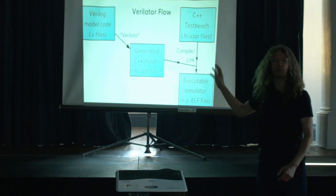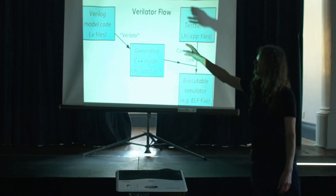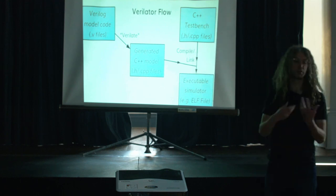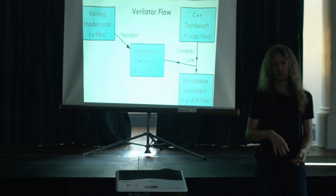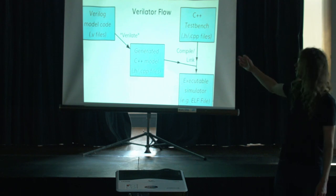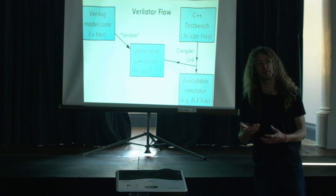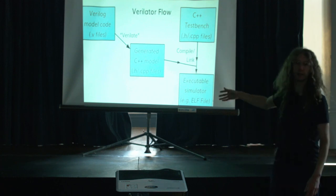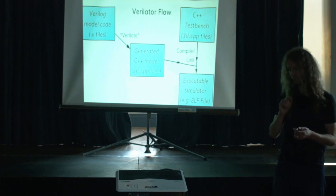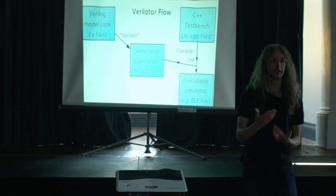This is the kind of flow if you're using Verilator to build a model of some Verilog code. On the left, you have some Verilog code; you run Verilator on it and it generates all your C++ model files. Although you have the model, it's not going to do anything by itself — you need to write a test bench to drive it. The test bench will instantiate the model and drive it forwards in time. Then you compile and link your test bench and the generated model together, and that gives you an executable simulator.